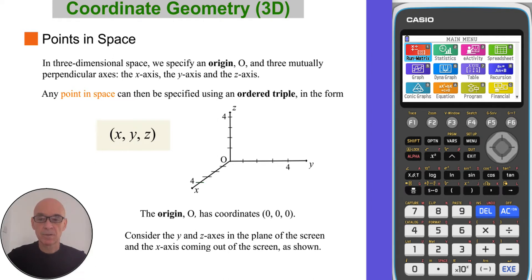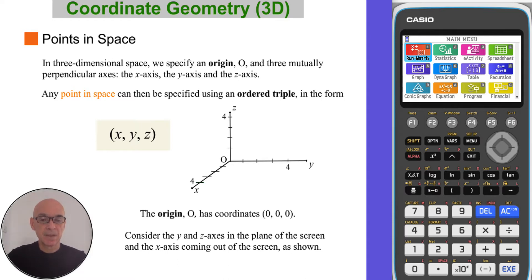The origin O has coordinates 0, 0, 0. Referring to the diagram, consider the y and the z-axis in the plane of the screen, and the x-axis coming out of the screen towards you.